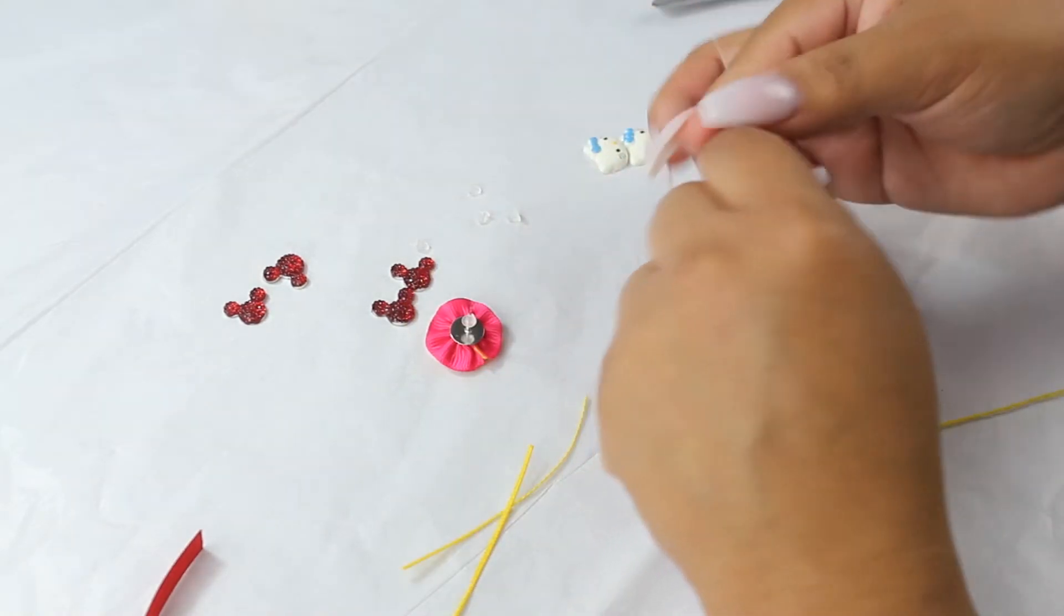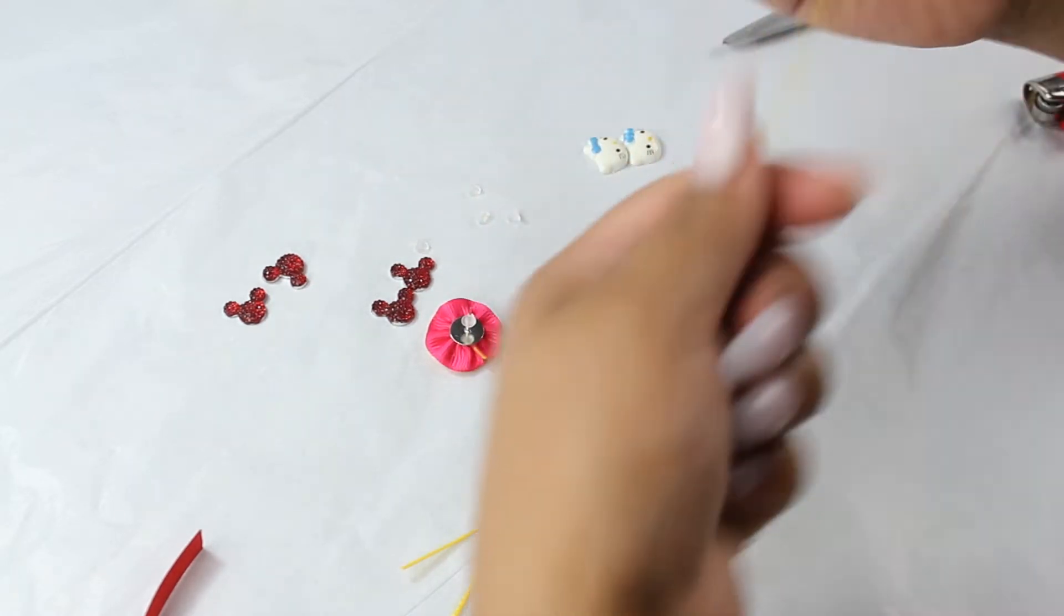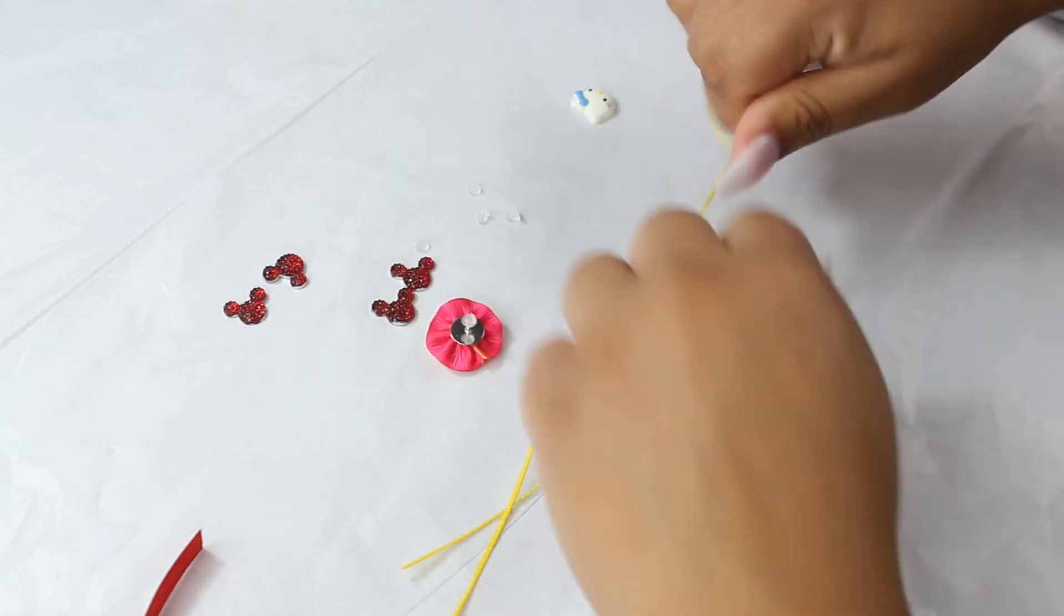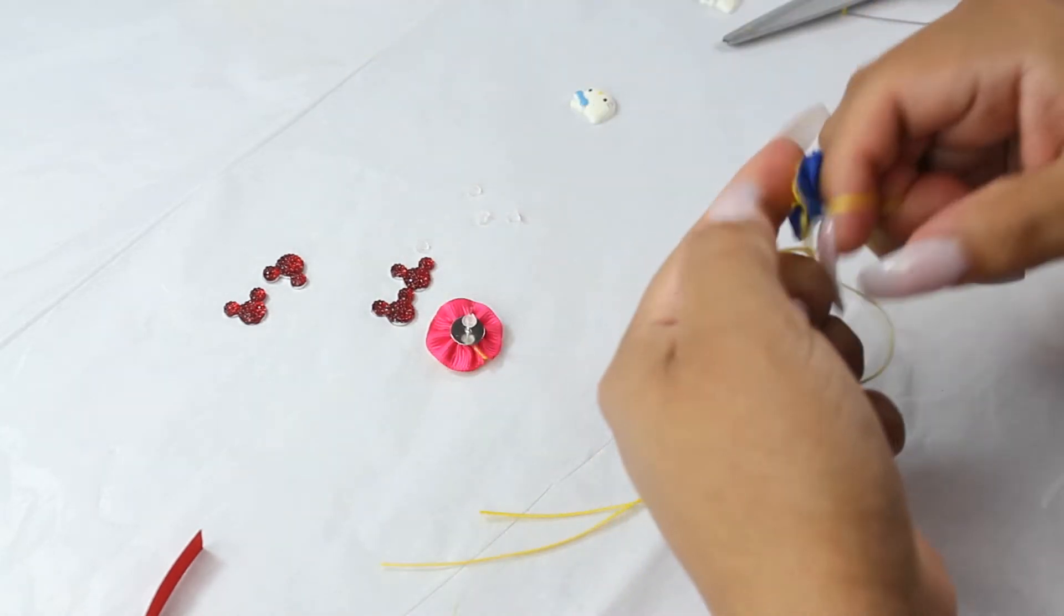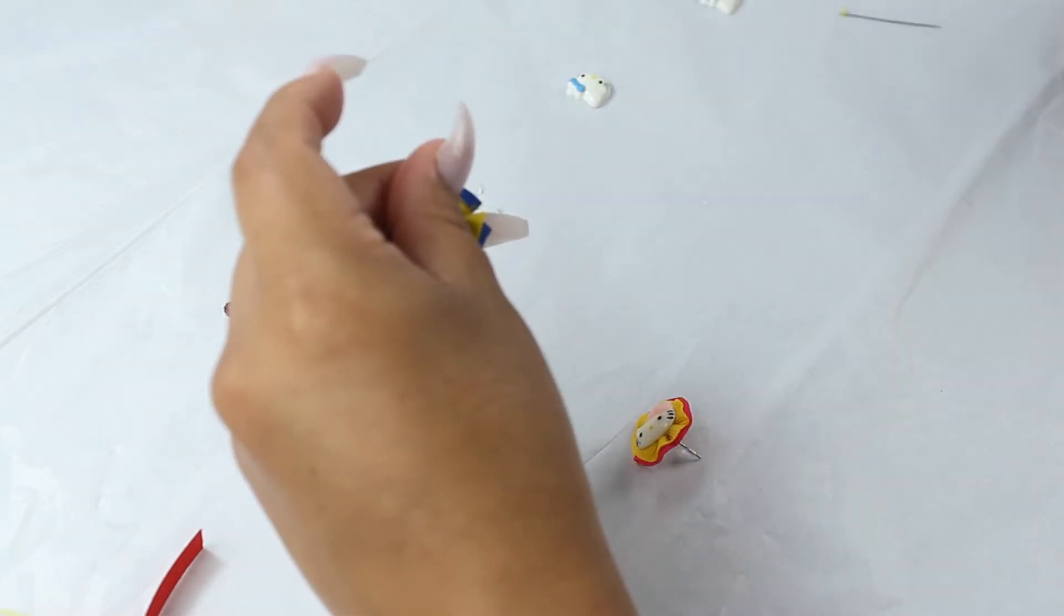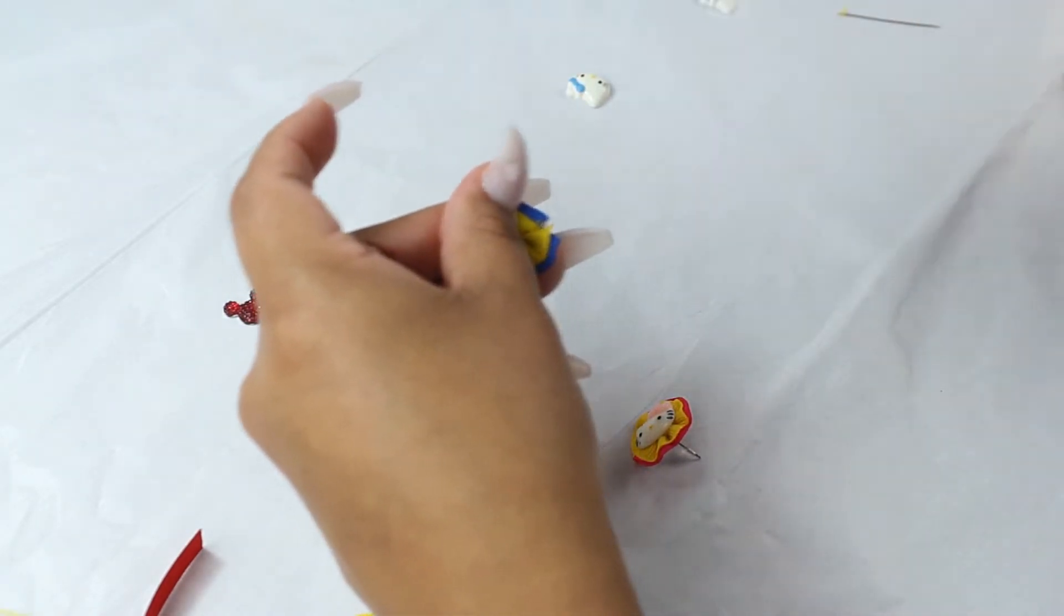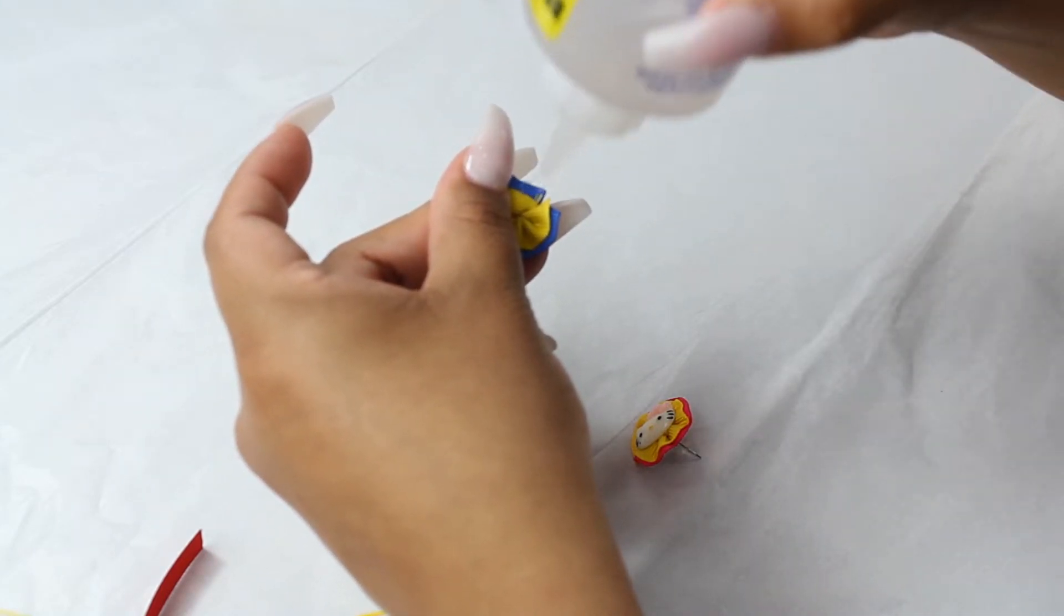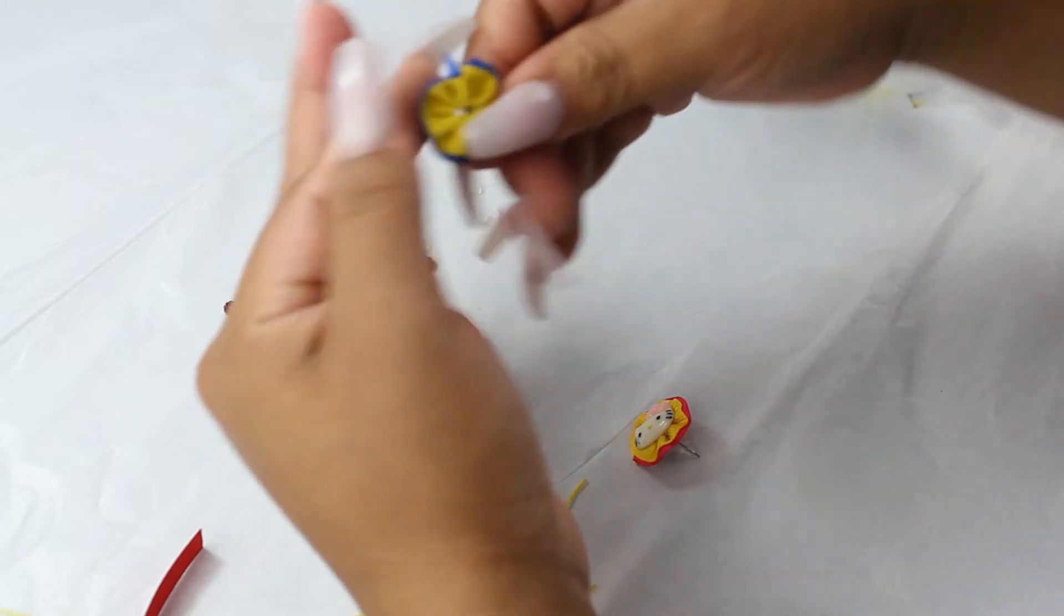Now you want to go ahead and tie both sides together. Tie it again, make sure it's really secure. I like to add a little bit of fabric glue to the edge, then you kind of bring them together and let it dry for a minute.